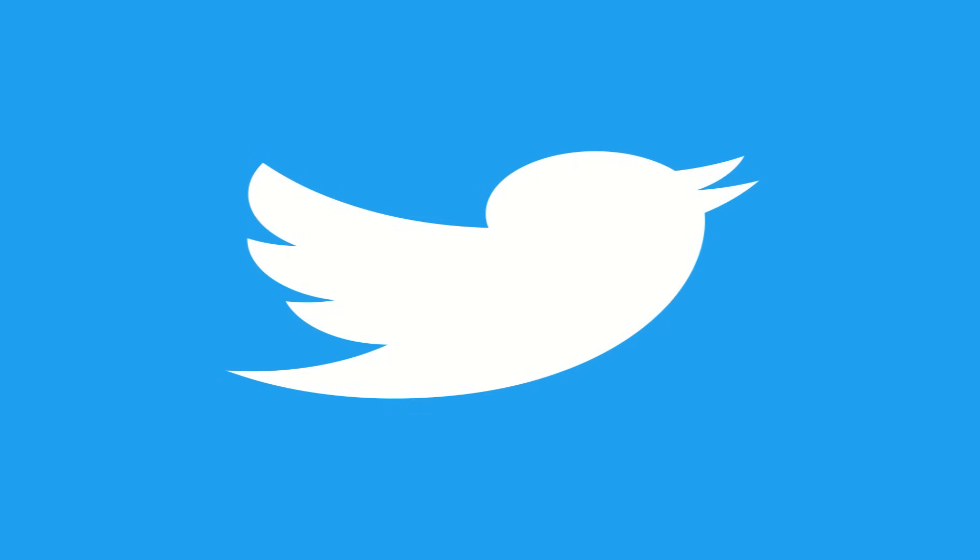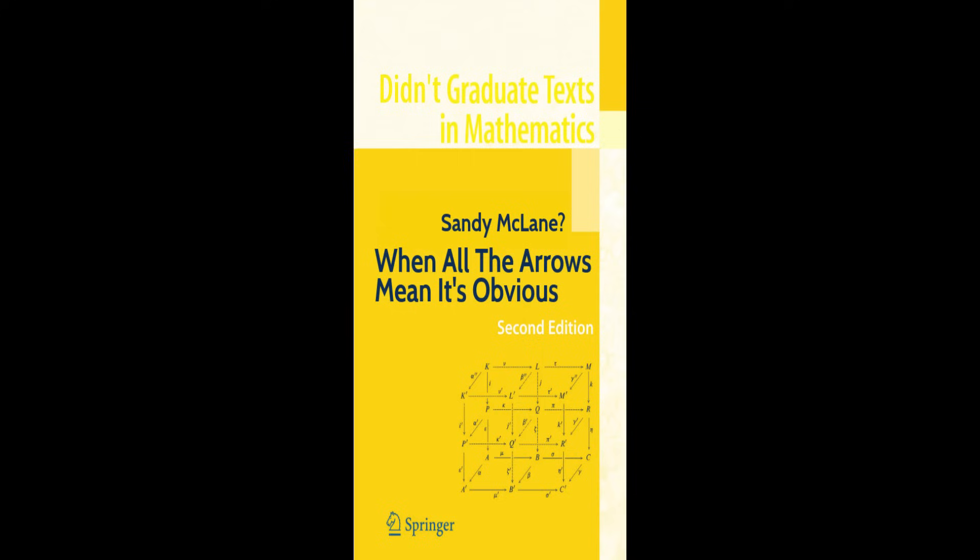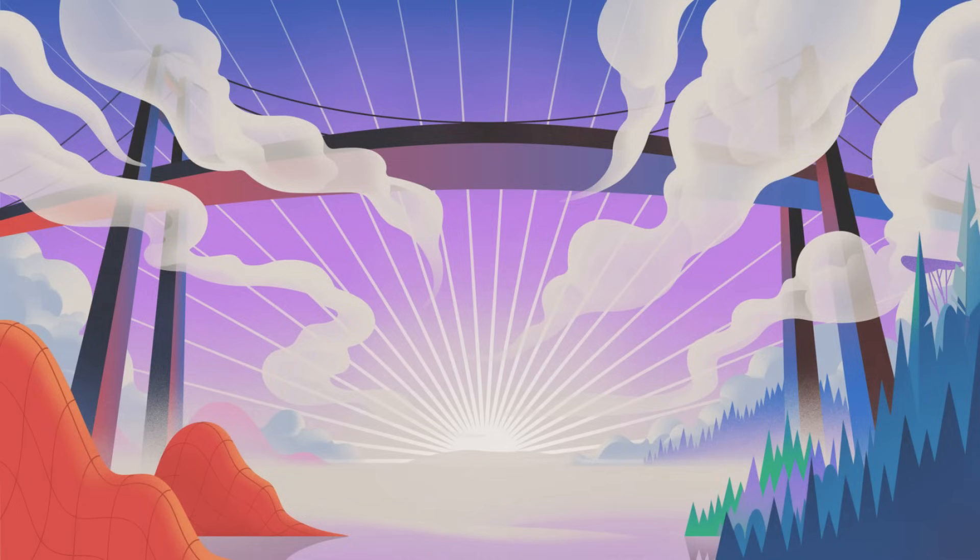Category theory has been trending on Twitter or X or whatever Elon wants to call it these days, and it's received considerable attention. From category theorists, it's portrayed as an elegant theory providing foundation and connecting all other branches of mathematics.